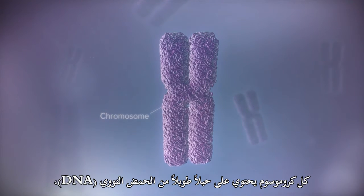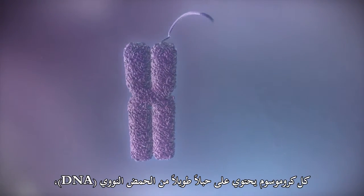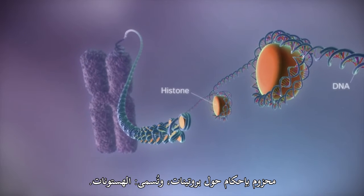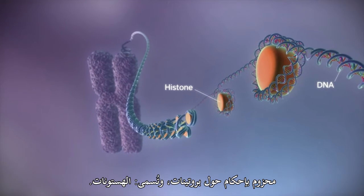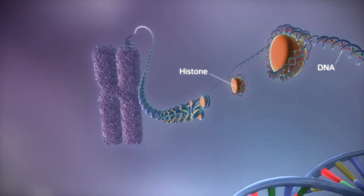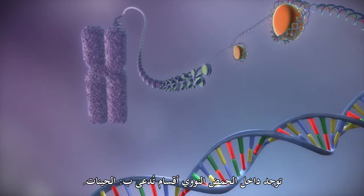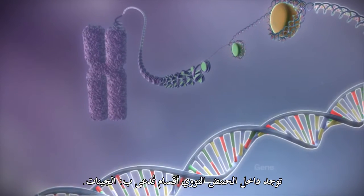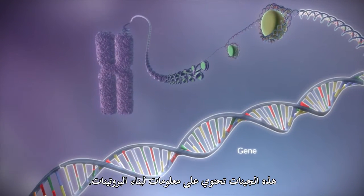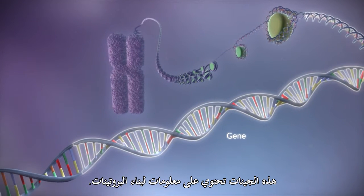Each chromosome contains a long strand of DNA, tightly packaged around proteins called histones. Within the DNA are sections called genes. These genes contain the instructions for making proteins.